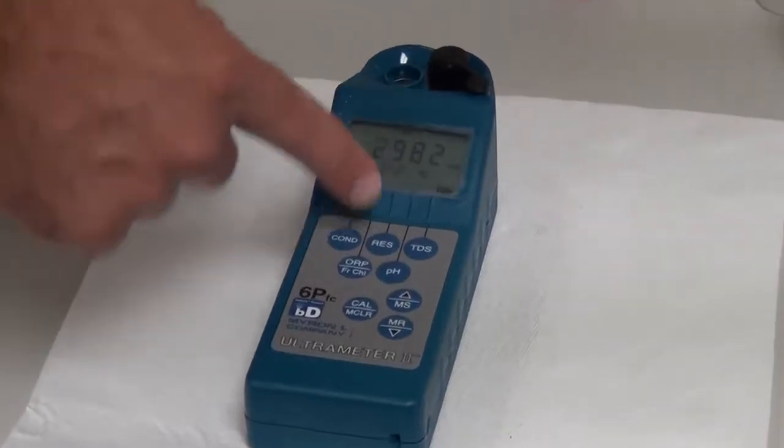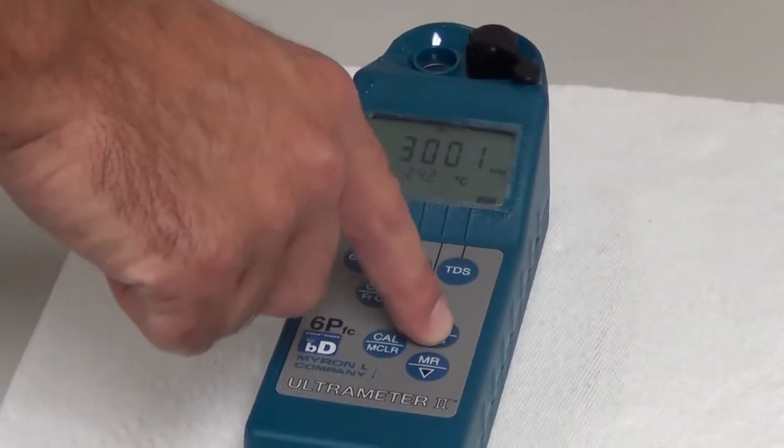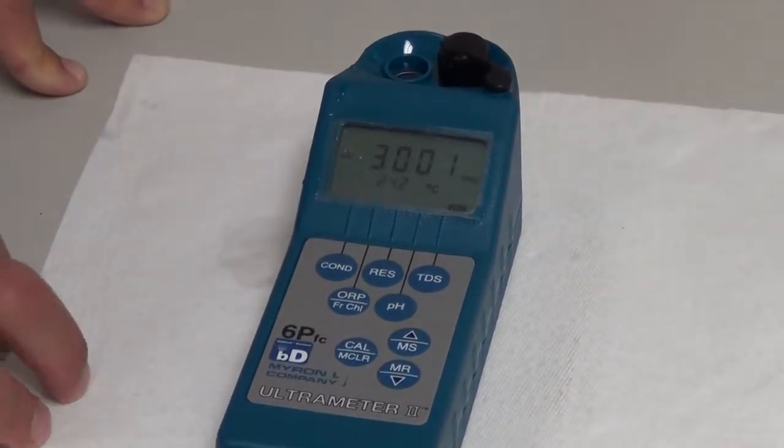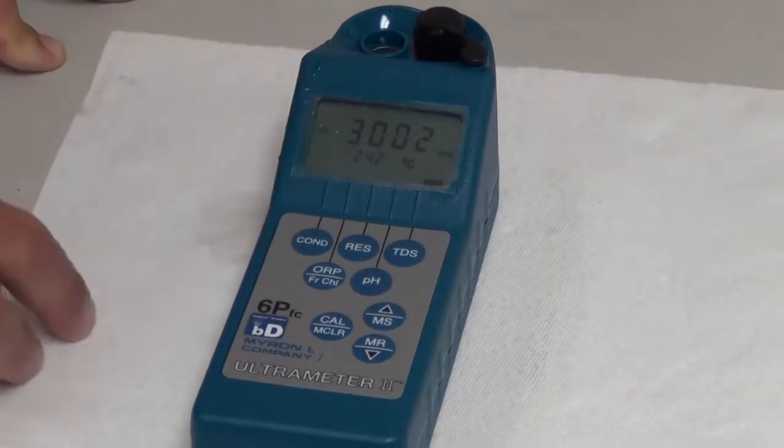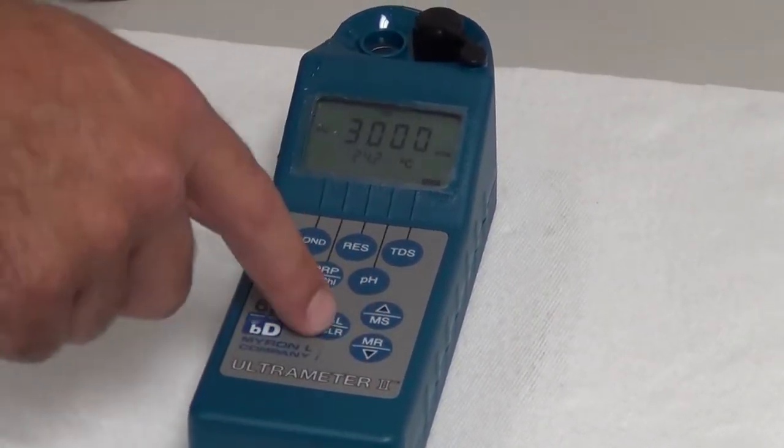So I'll hit my cal button. See, it says cal across the top. Going to arrow up to 3000 ppm. I'm going to hit enter or cal again. You'll see that it may bounce around by one or two digits. That's okay. Put that down. 3000.